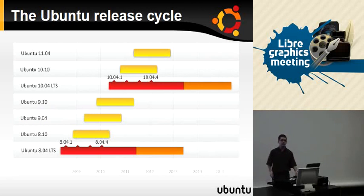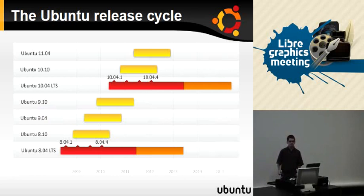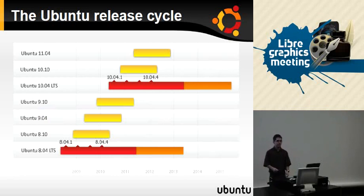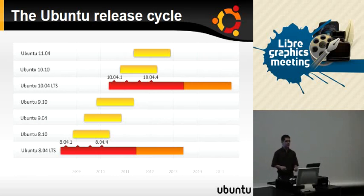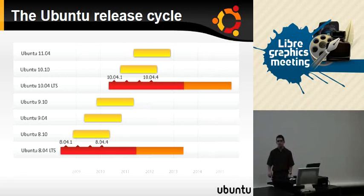To start, let's have a look at the release cycle. As most of you probably know, Ubuntu is releasing every six months. We have long-term support releases every two years usually. Usual support is for 18 months. Long-term releases are three years on the desktop, five years on the servers.